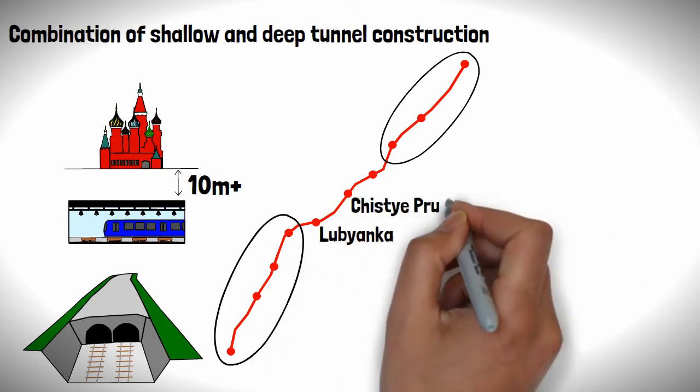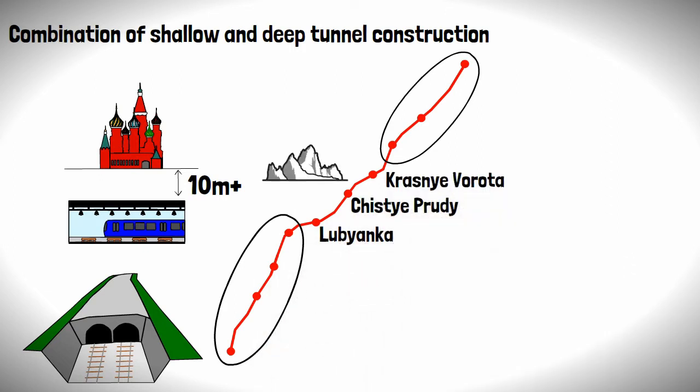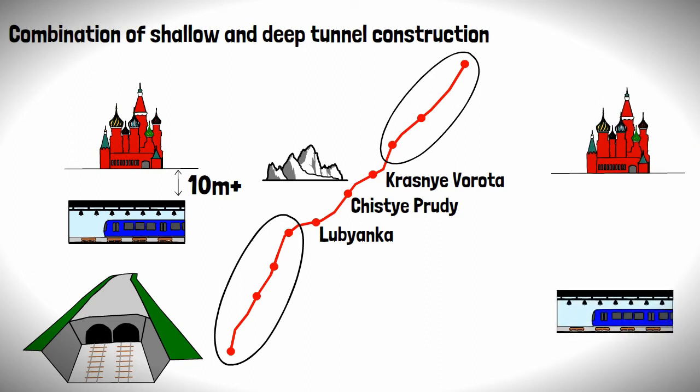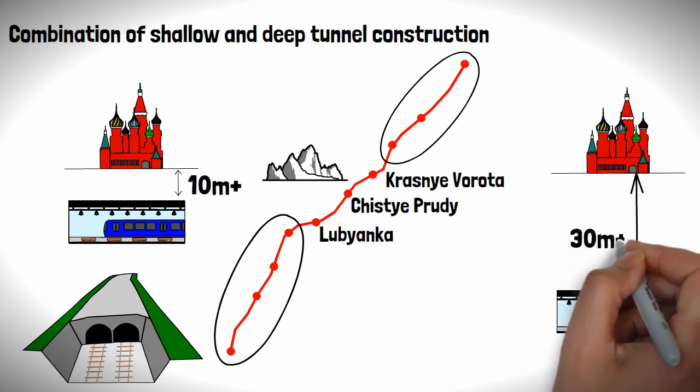As the line moves towards the city center, the topography varies much more, resulting in deeper stations which were located over 30 meters below ground level.